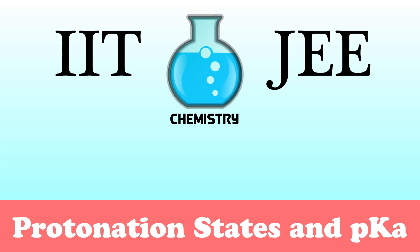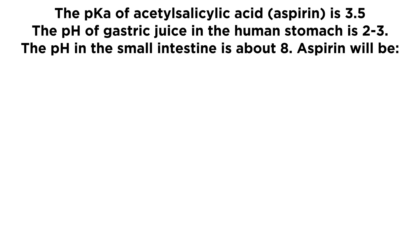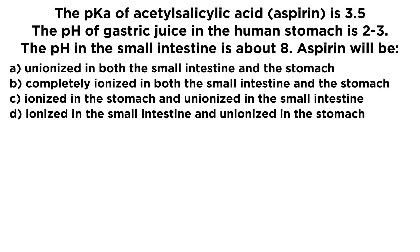Let's take a look at a problem regarding protonation states and pKa. The pKa of acetylsalicylic acid, also known as aspirin, is 3.5. The pH of gastric juice in the human stomach is around 2 to 3, and the pH in the small intestine is about 8. So aspirin will be — and here are our options — we want to talk about the state of ionization in the small intestine and the stomach.